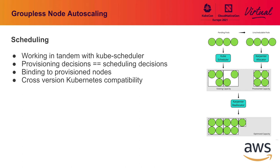The cluster autoscaler is limited in version compatibility because it copies the kube scheduler directly into its code base. There's a recommendation that the kube scheduler version in the cluster autoscaler's code base must match the one running in your masters, creating tight version coupling. By enforcing the binding decision ourselves, we free ourselves from this version compatibility issue — the kube scheduler has its own responsibilities and the Karpenter allocator scheduler has its own. Versions of Karpenter can work across many versions of Kubernetes.